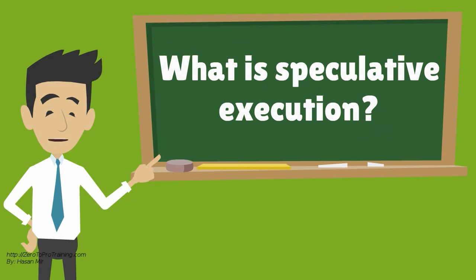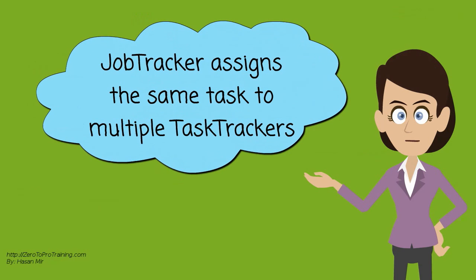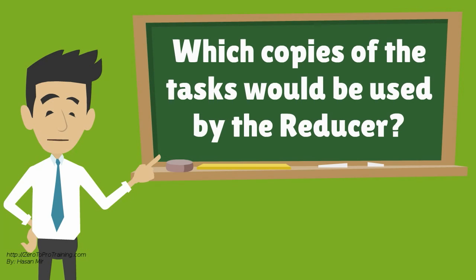What is speculative execution? The job tracker assigns the same task to multiple task trackers. This process is called speculative execution. If multiple task trackers are performing the same tasks, then which one would be used by the reducer?